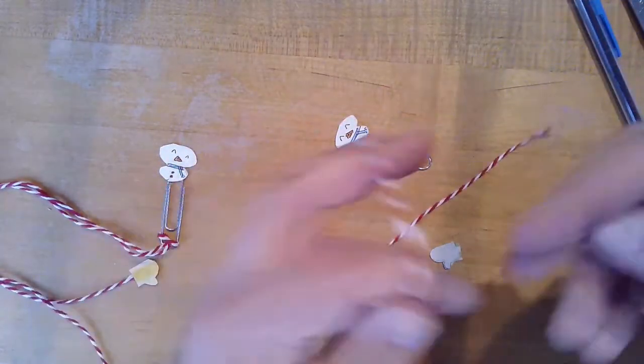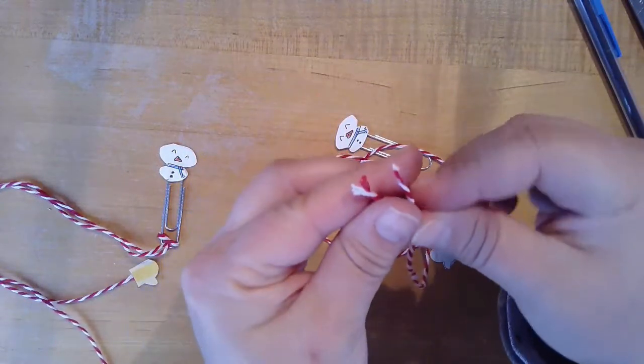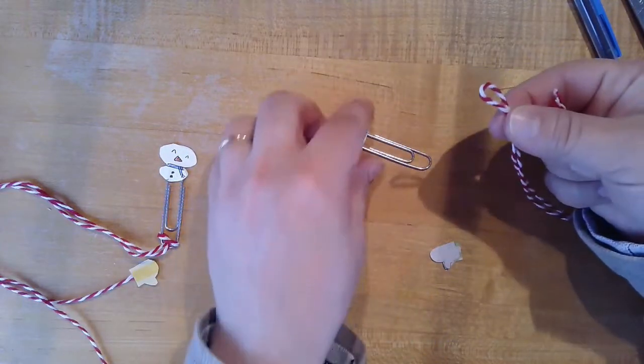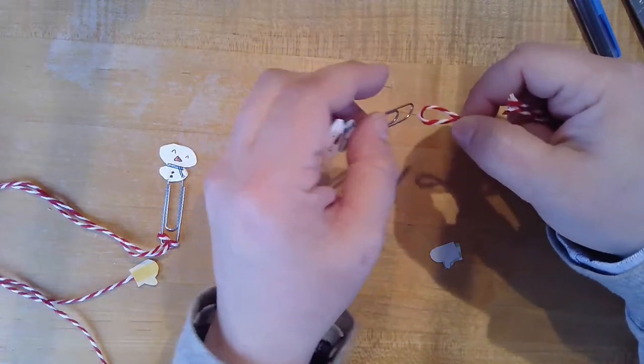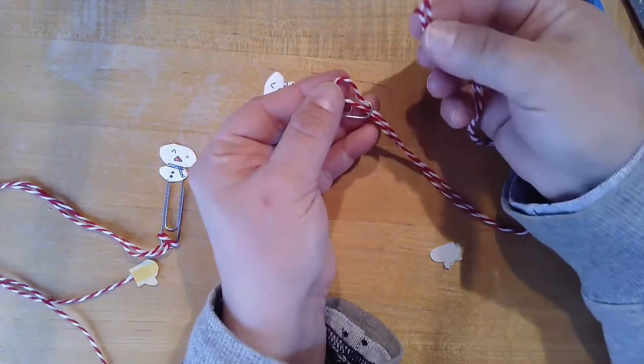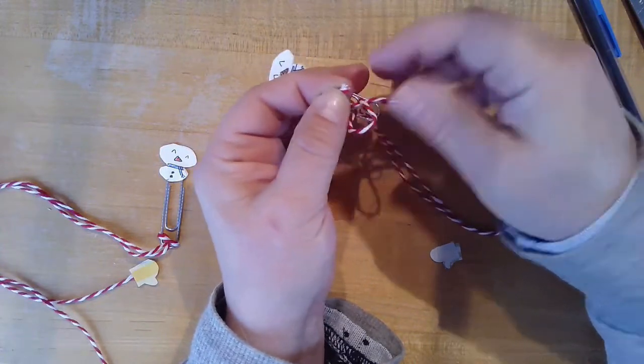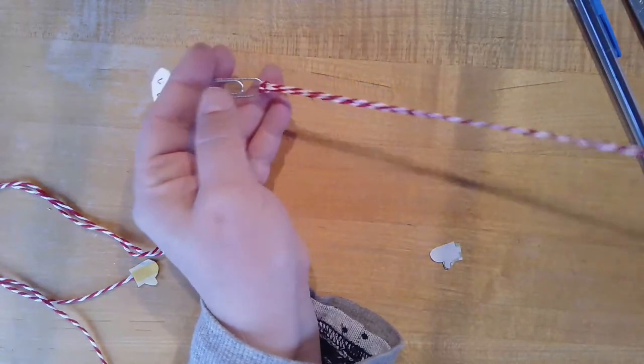And I'm going to take my string and I'm going to tie it on there with kind of a loose knot. You can see that by making a loop on one end, putting it through the bottom of the paperclip. And then I bring my other two ends through the loop and pull it tight. And that's just a very simple knot.